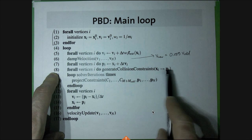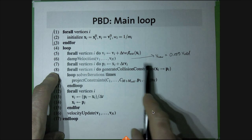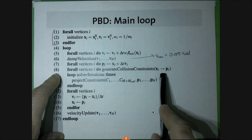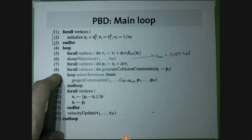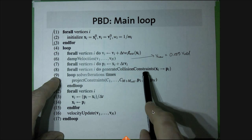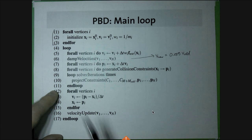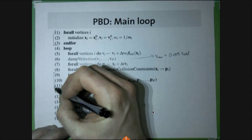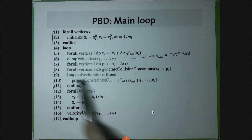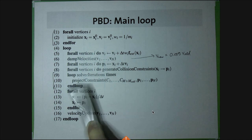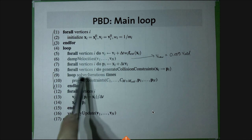Step eight is where you stick in collision detection — it detects collisions and creates extra collision constraints, which are taken into account later. The main algorithm of PBD is steps nine through eleven: a loop that for a specified number of iterations — typically five or ten — projects all of the constraints. You typically set it to whatever number of iterations you have time to compute with, especially in real-time applications.